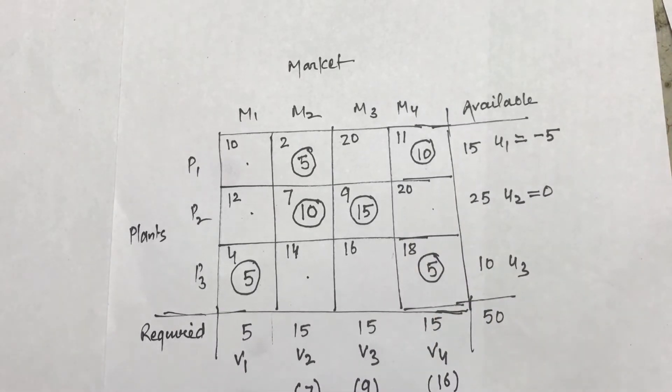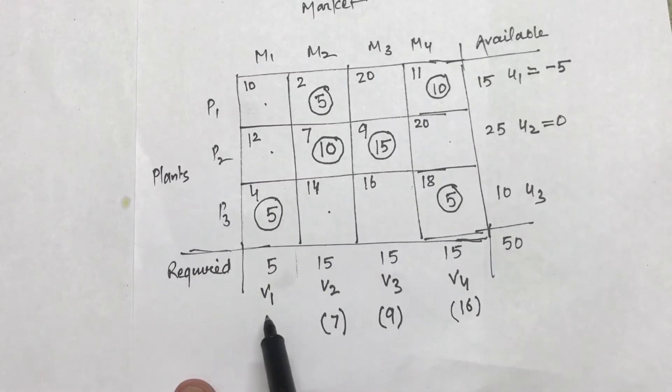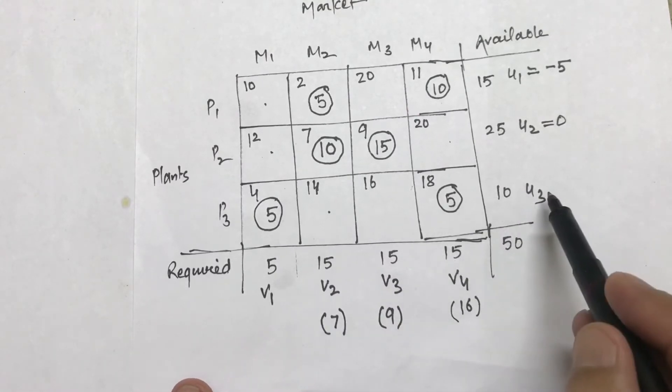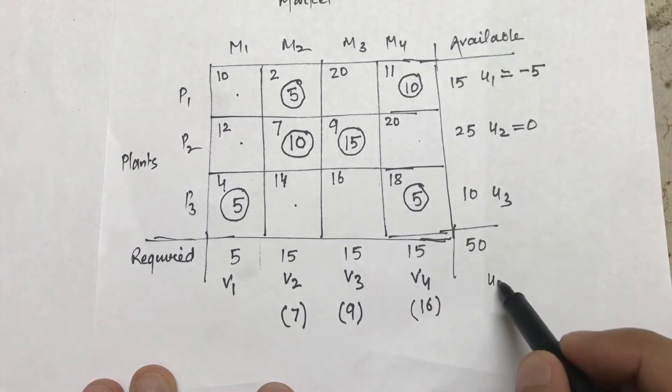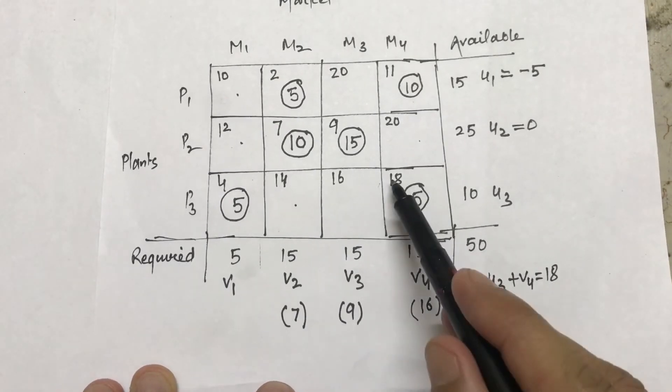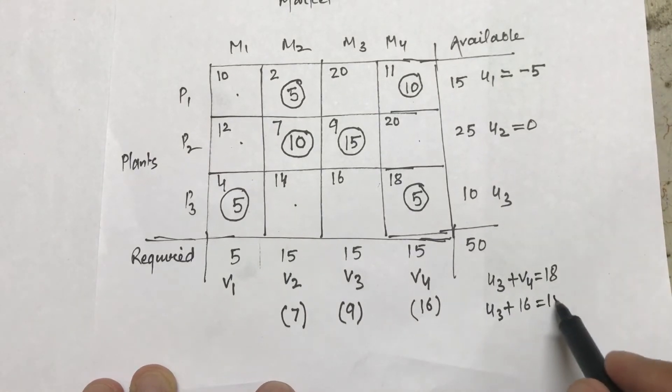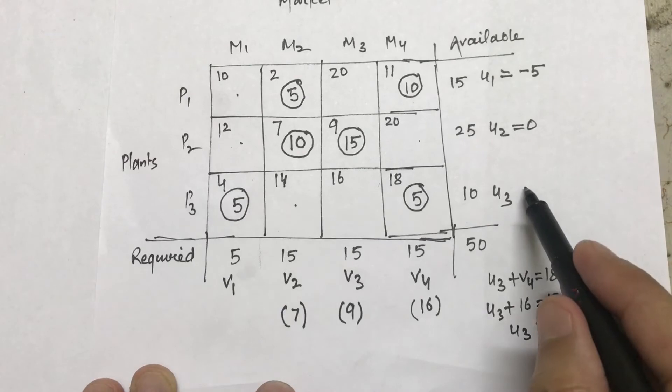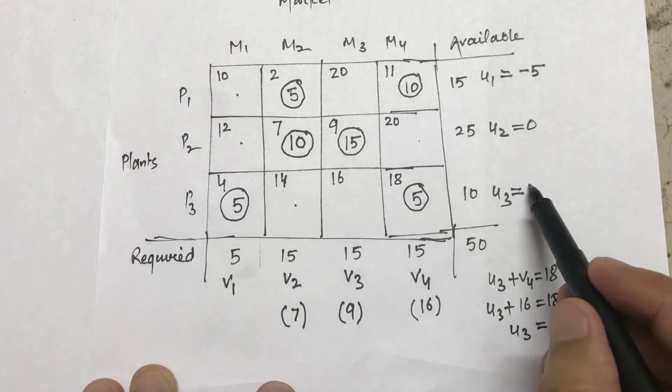And that's how you can calculate v1. So I will show you how to calculate v1 and u3 which are left. You can calculate u3 from here. I will show you one particular calculation, how to calculate u3 from this cell. I can use u3 plus v4 is equal to 18. So I already know the value of v4 which is 16, so u3 plus 16 is equal to 18, so u3 is going to come out to be 2.